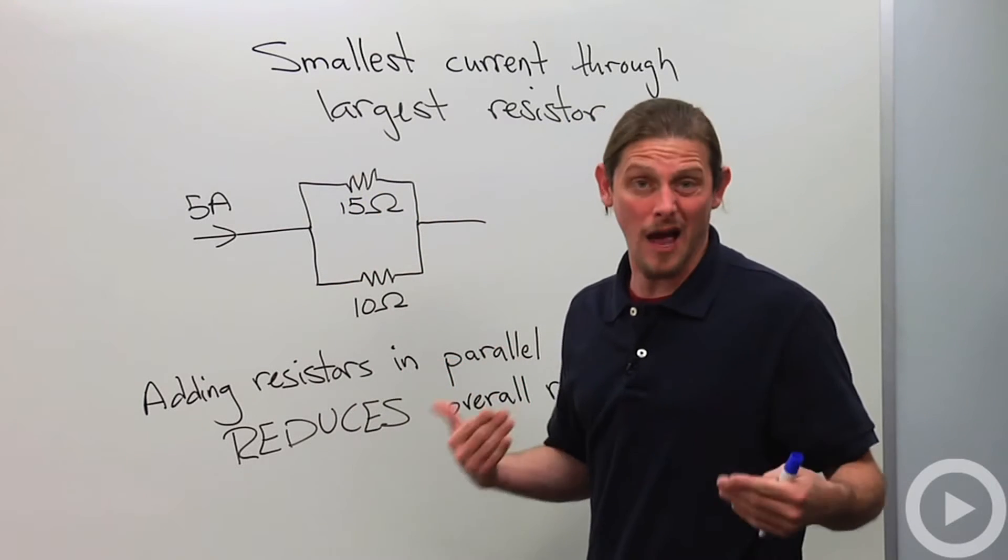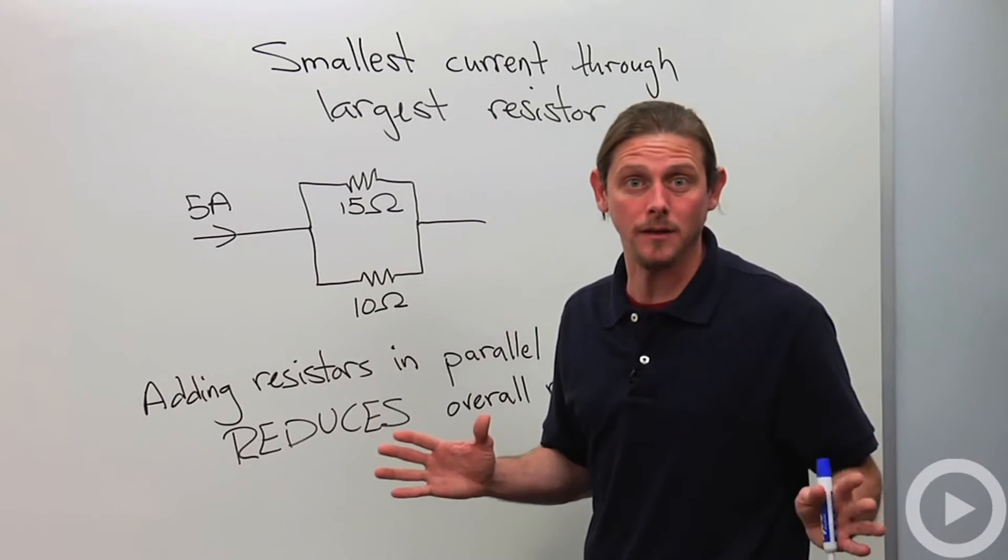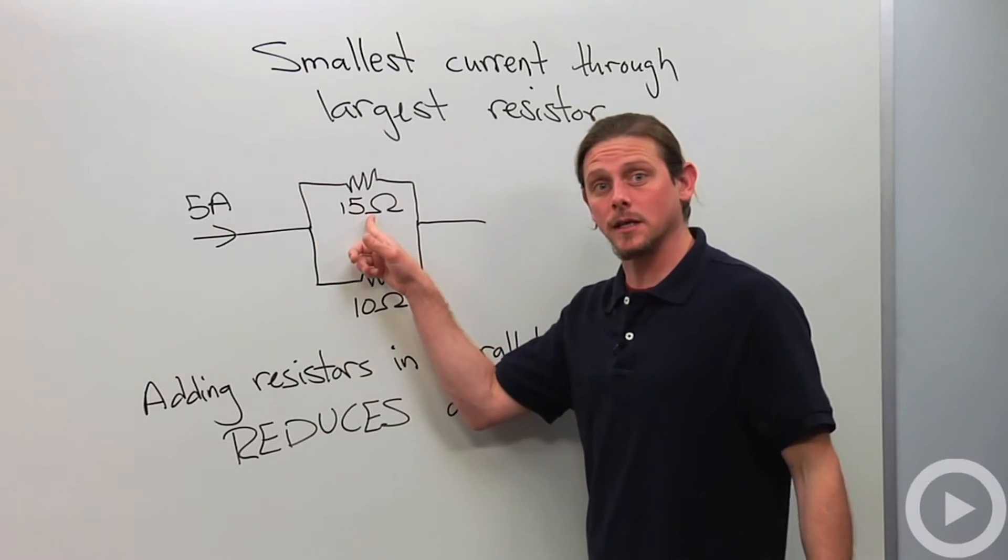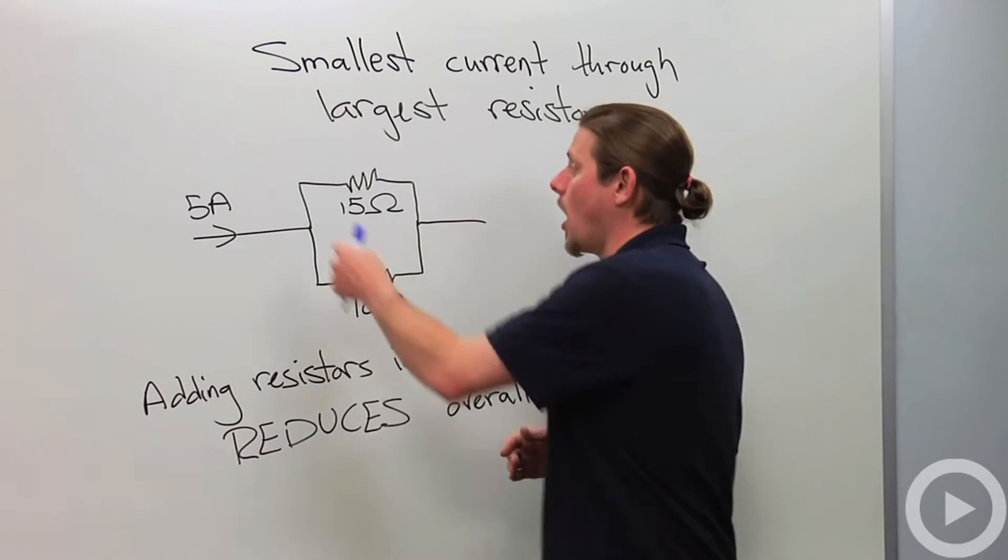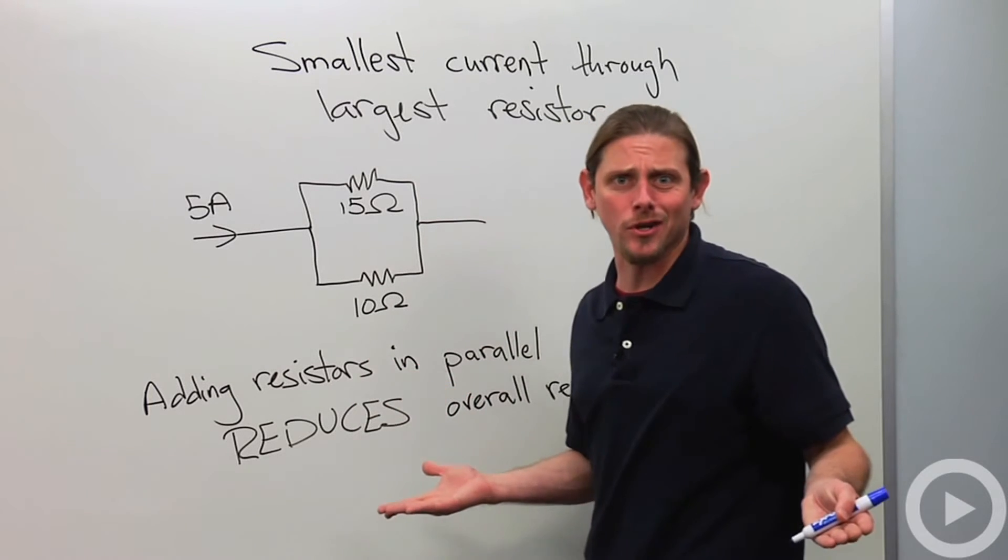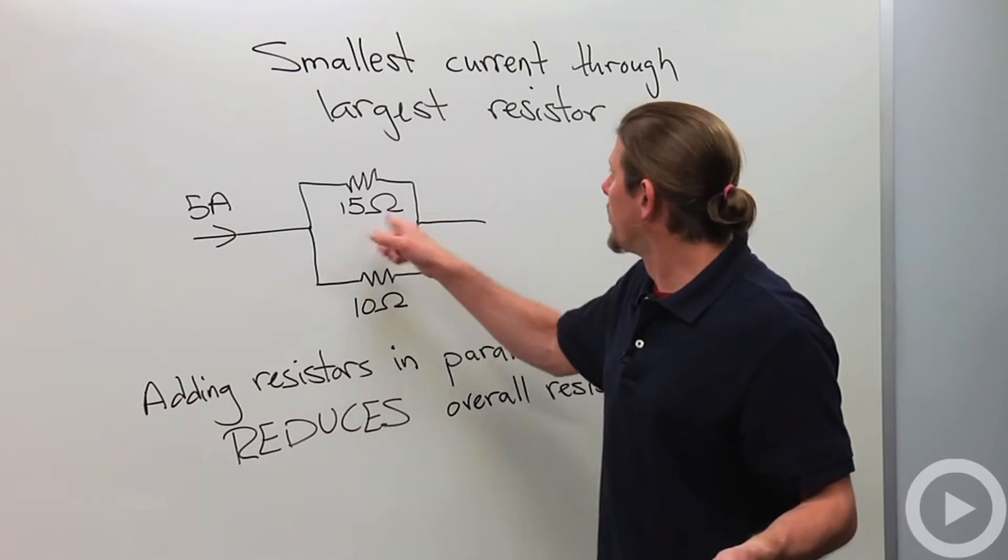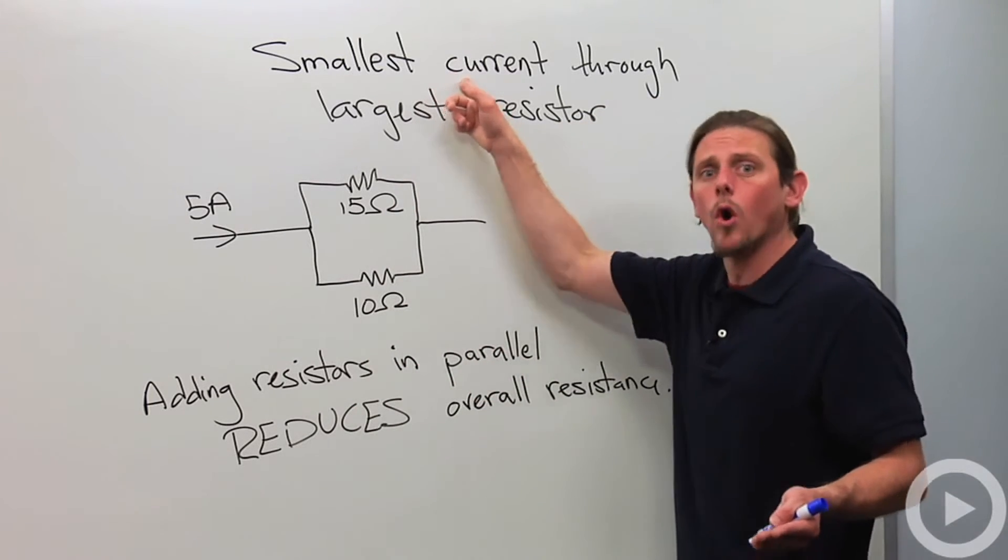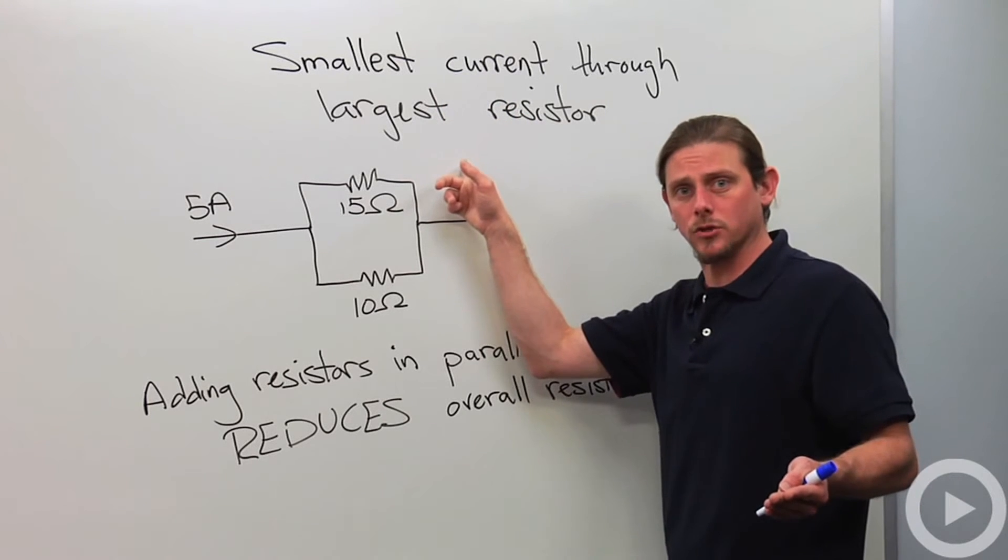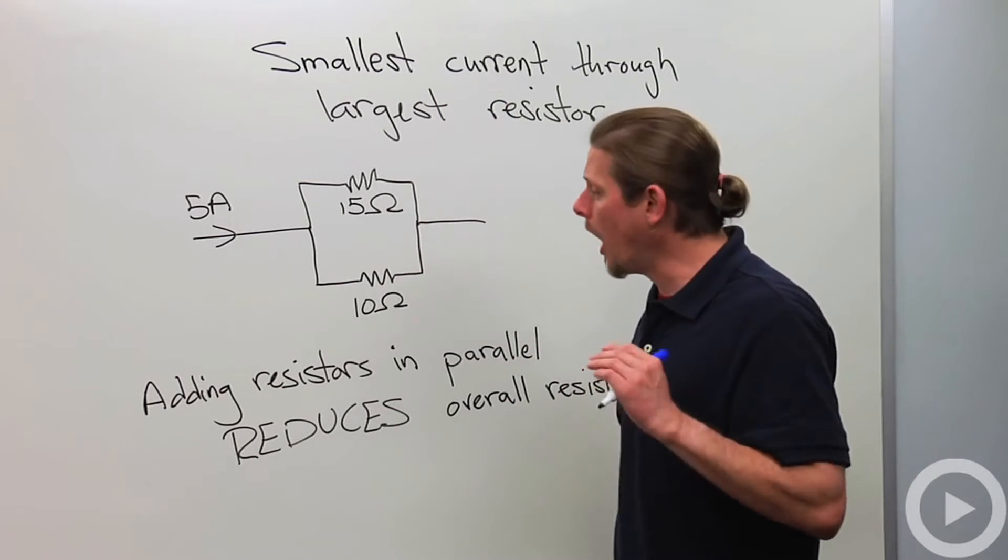Think of the resistors as representing traffic lights. The larger the resistance, the more traffic lights along this path. So the less cars are going to go there.